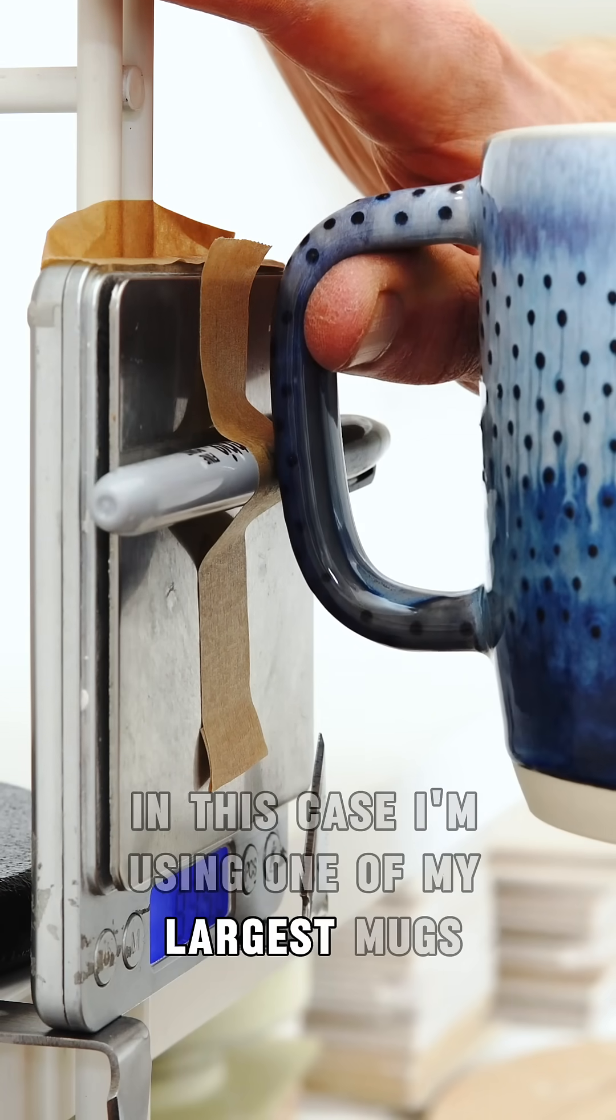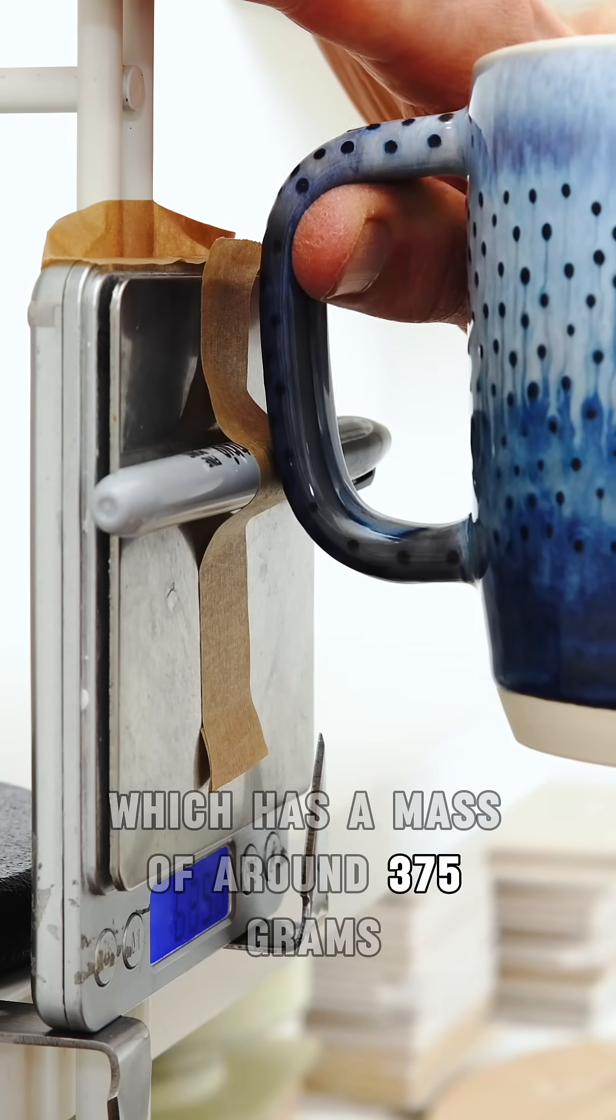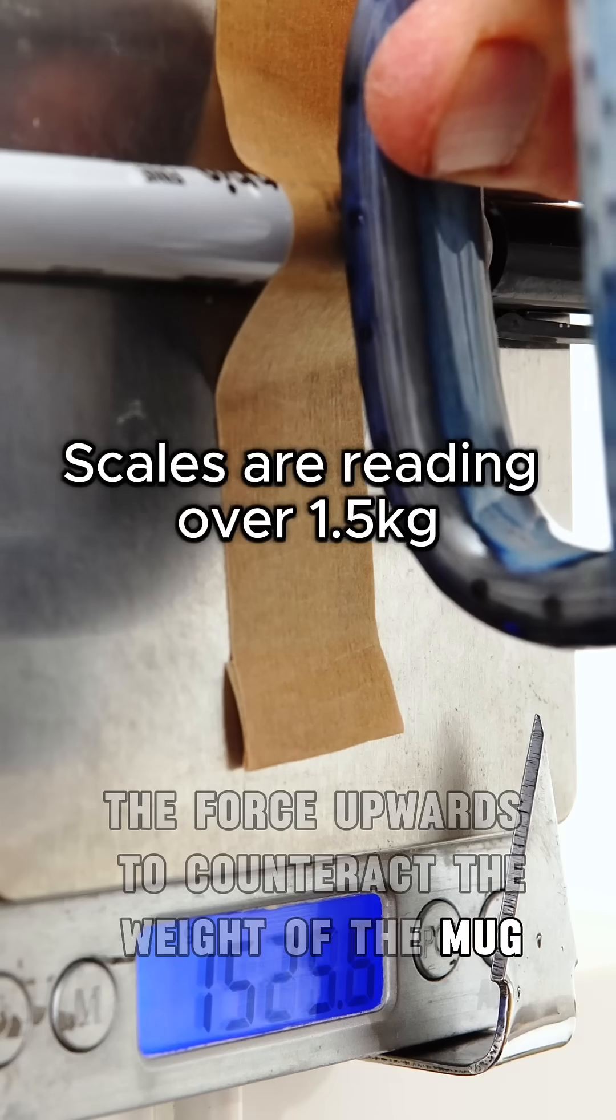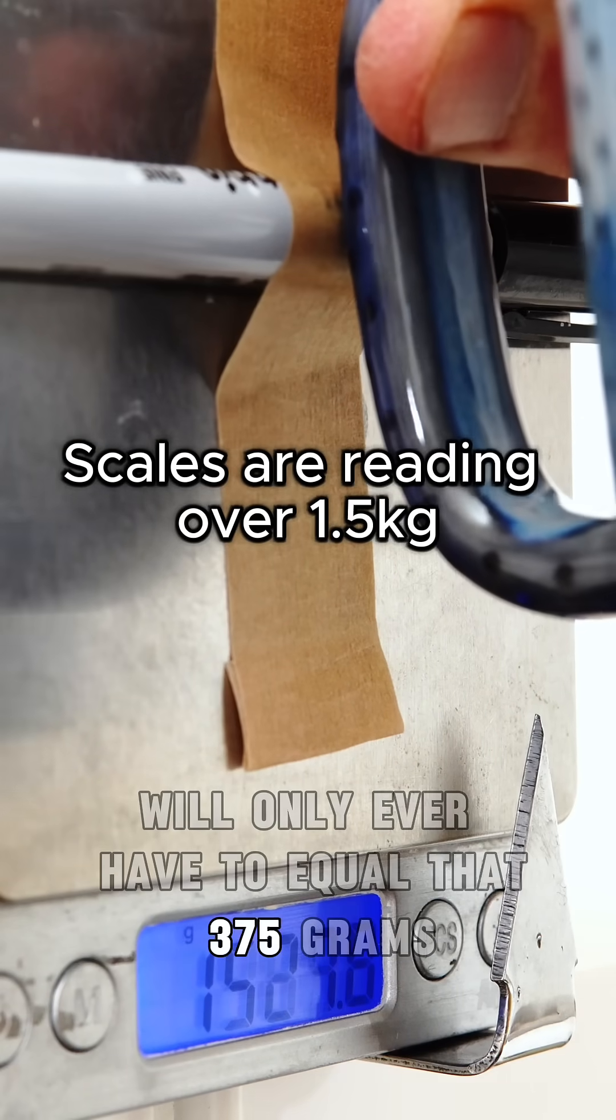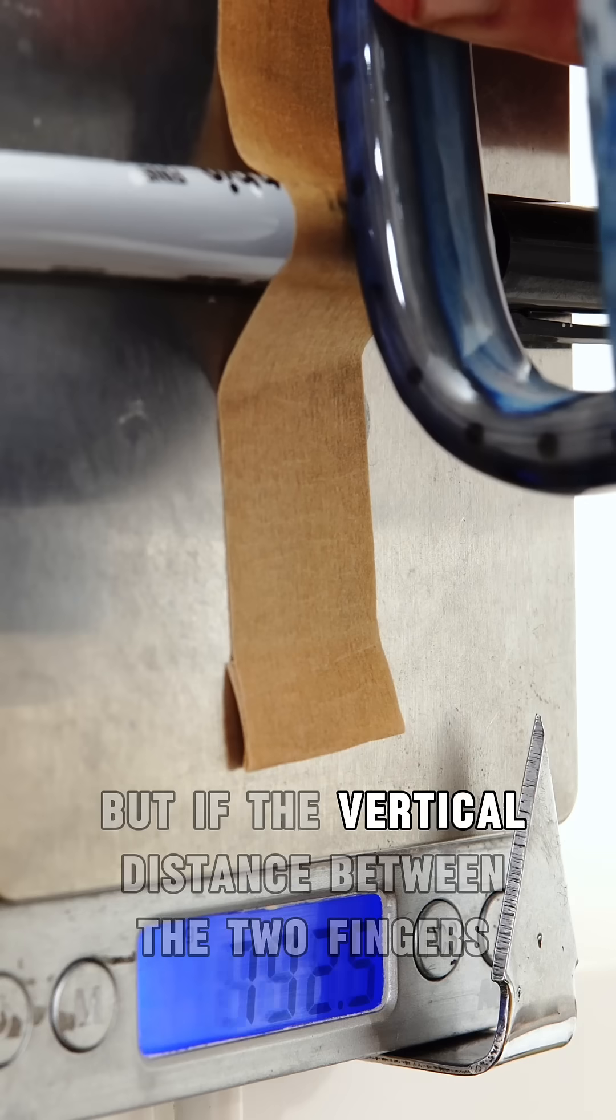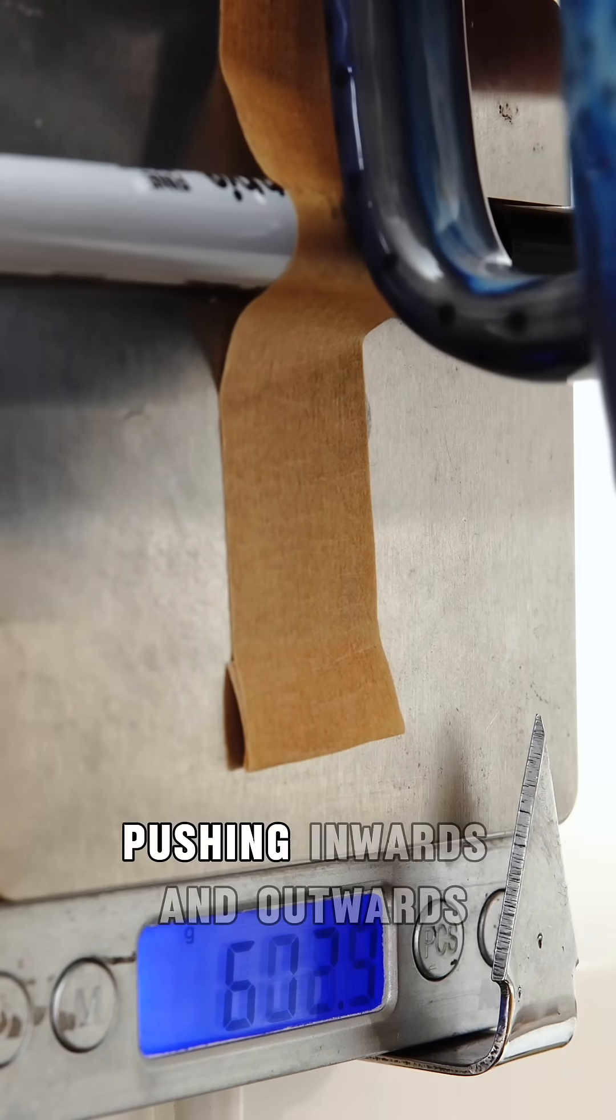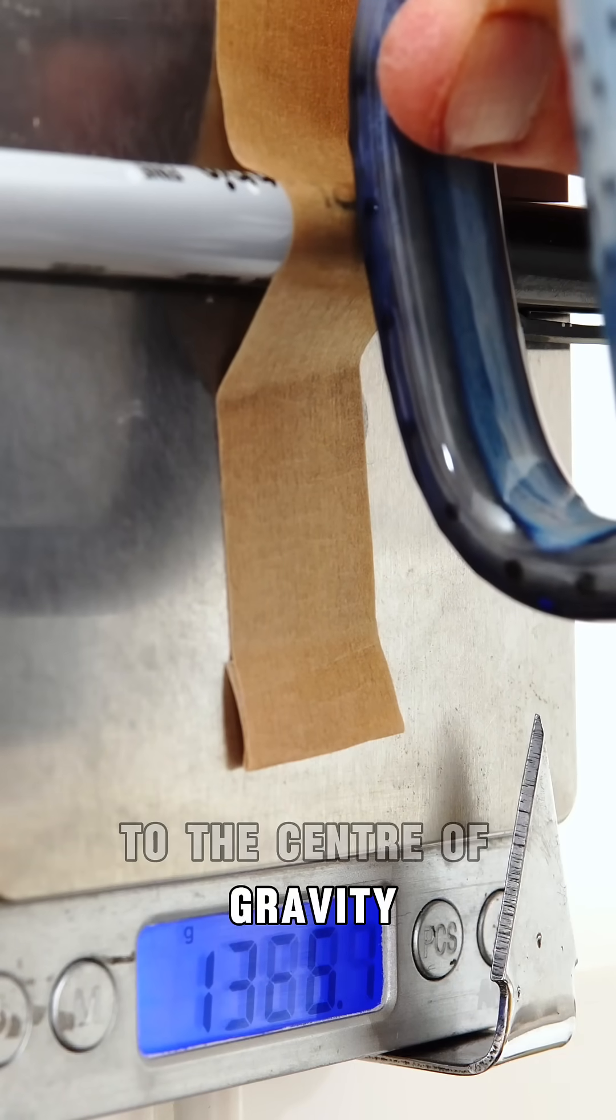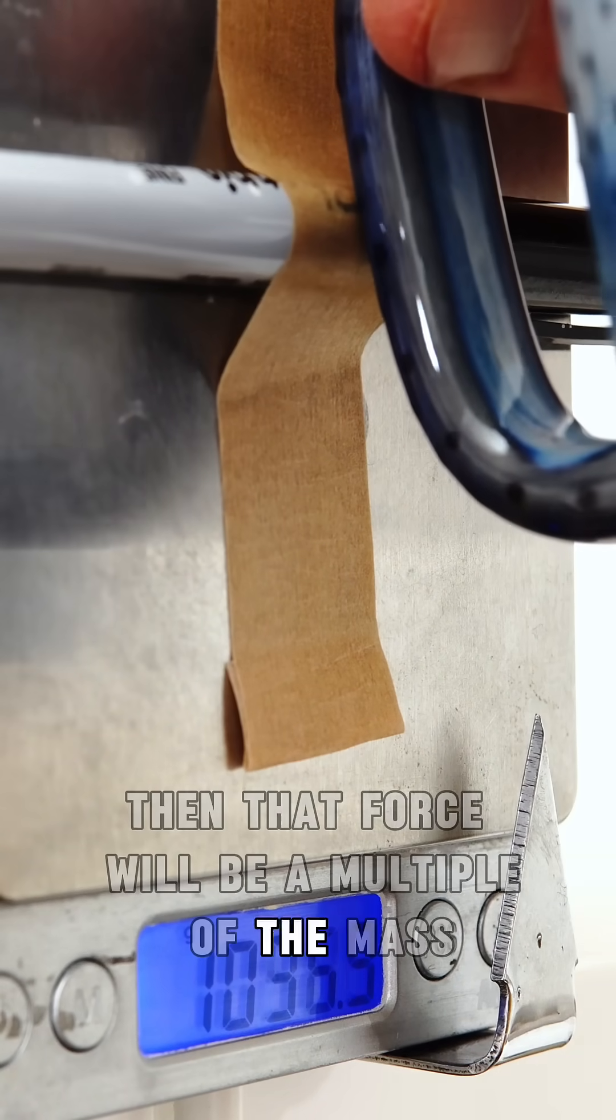In this case I'm using one of my largest mugs which has a mass of around 375 grams. The force upwards to counteract the weight of the mug will only ever have to equal that 375 grams, but if the vertical difference between the two fingers pushing inwards and outwards is significantly shorter than the horizontal distance to the centre of gravity then that force will be a multiple of the mass.